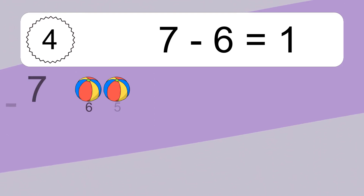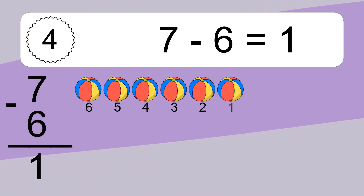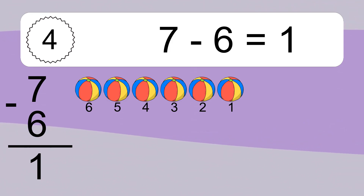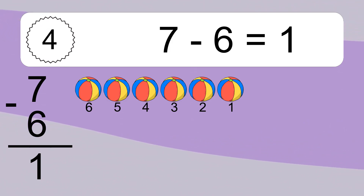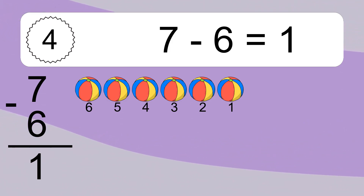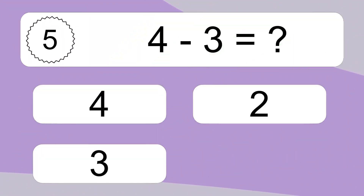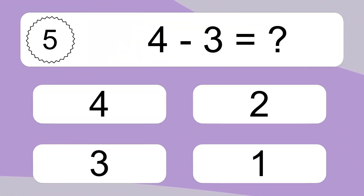7 minus 6 equals 1. Let's count it. 6, 5, 4, 3, 2, 1. 7 minus 6 equals 1.